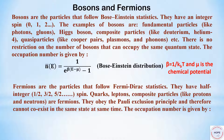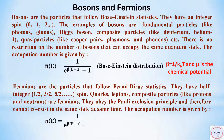Next, fermions. Fermions are the particles that follow Fermi-Dirac statistics. They have half-integer spin: 1/2, 3/2, 5/2, etc. Quarks, leptons, and composite particles like protons and neutrons are fermions. They obey the Pauli exclusion principle and therefore cannot coexist in the same state at the same time. The occupation number is given by this expression.